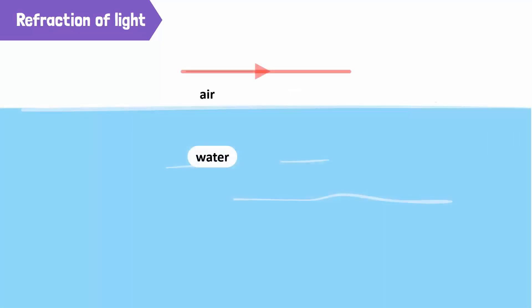When a ray of light meets the surface of water at an angle, it bends from its original path. Since water is a dense medium, it slows down the speed of light, resulting in the bending of light rays.